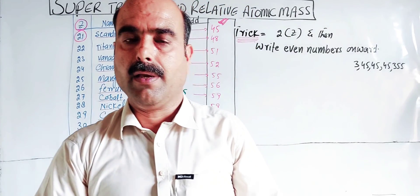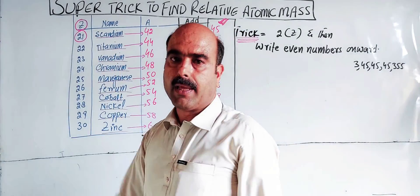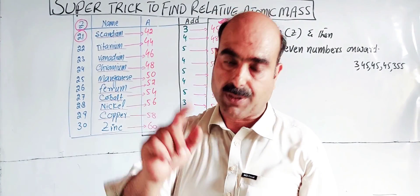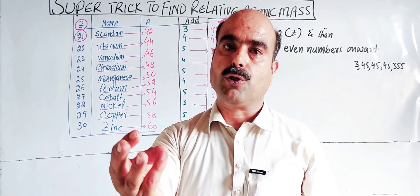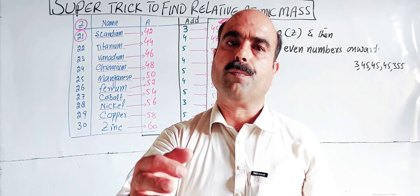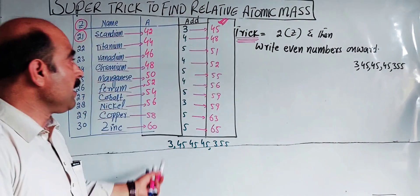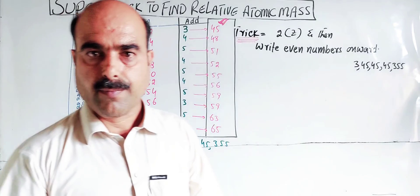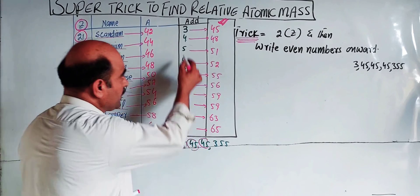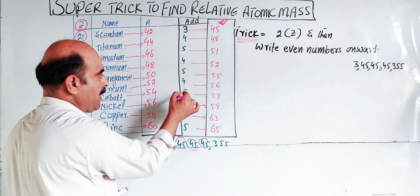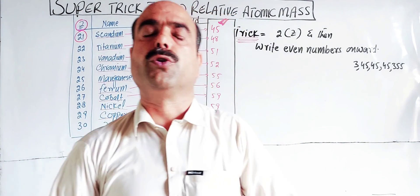Going back to atomic numbers from 21 onwards, the even numbers in this range follow their own pattern: 42, 44, 46, 48, 52, 54. The mass numbers for transition metals follow a sequence of approximately 3, 4, 5, 4, 5 differences, which completes the super trick for elements 21 to 30.